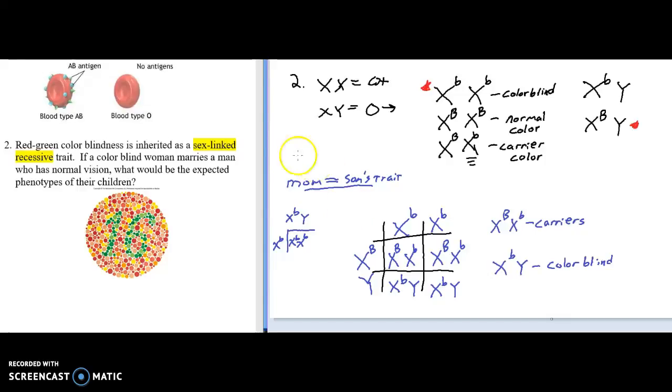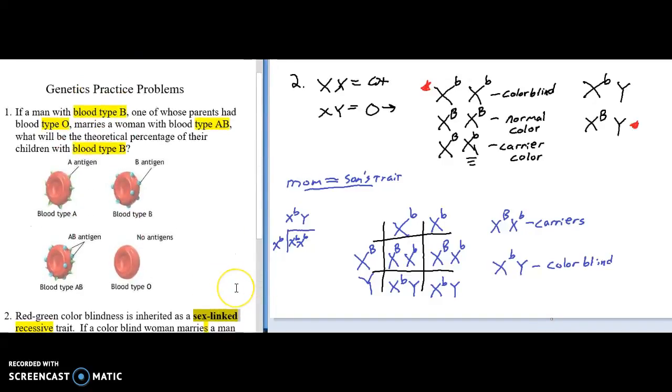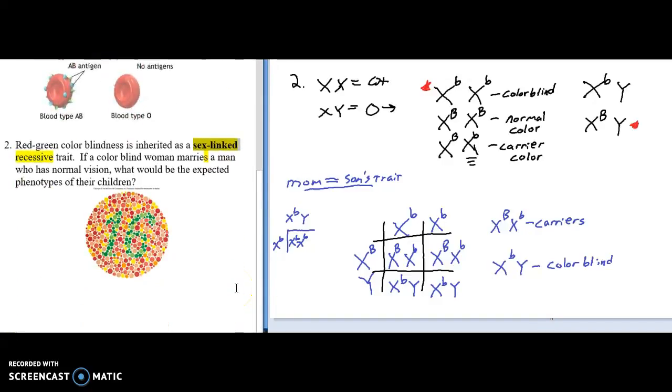Big thing, though, look for those words right there. Look for the words that say sex-linked. That is the key. And when you see those two words, automatically go to the X and the Y chromosome to solve this problem. Sex-linked. We also looked at blood typing. Definitely make sure you guys can do these. You'll see them on the exam.